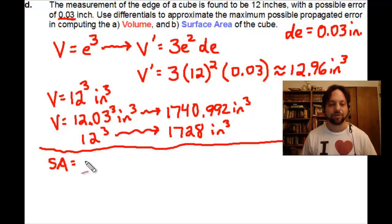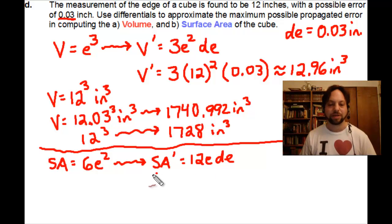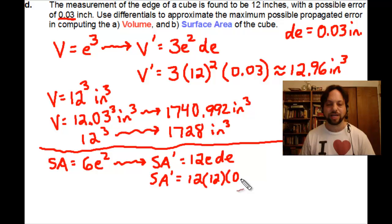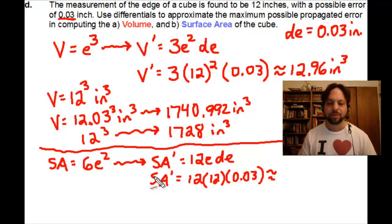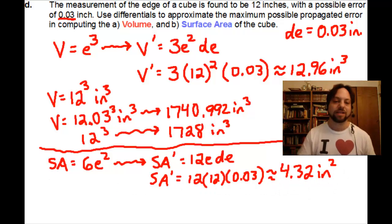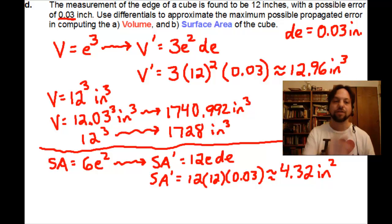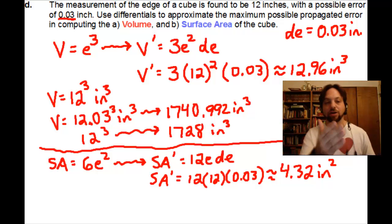For surface area, the formula is 6e², so differentiating gives SA' equals 12e·de. Plugging in e equals 12 and de equals 0.03 gives a maximum propagated surface area error of 4.32 square inches. Whether the ruler was 0.03 too long or 0.03 too short, both actual errors fall within this maximum propagated error — which is pretty cool.